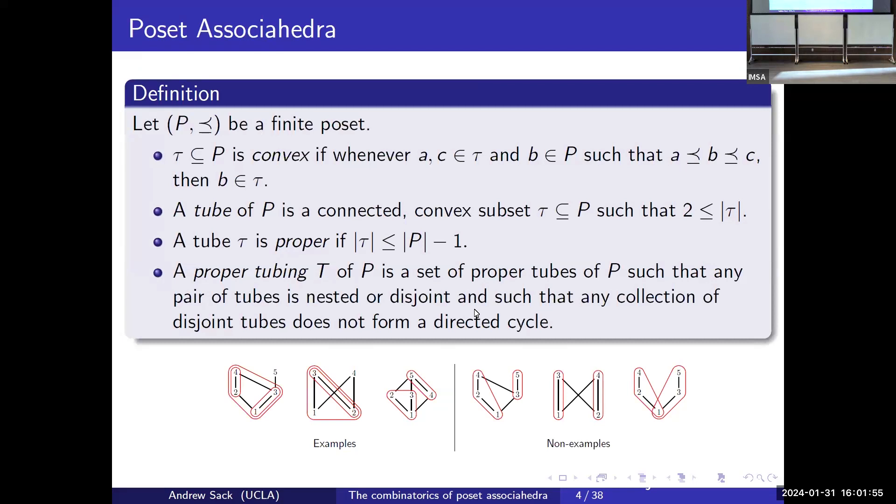We can move from one vertex to another by applying a single application of the associativity rule. So we're going to talk about posets and we have to do some basics about posets. Here we're going to have P be a finite poset. We say that a subset of P is convex if whenever we have two things in that subset, we have everything in between. And we say that it's connected if it's connected as a subposet.